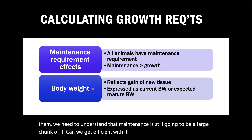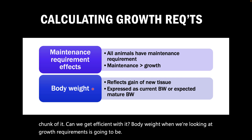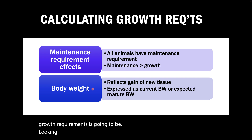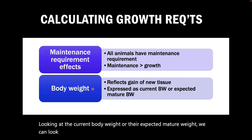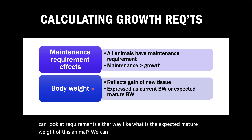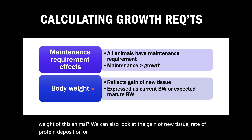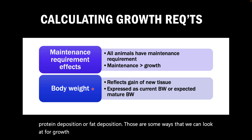When looking at growth requirements, body weight is going to be based on the current body weight or their expected mature weight — we can look at requirements either way. We can also look at the gain of new tissue, rate of protein deposition, or fat deposition. Those are some ways to evaluate growth requirements that you'll see applied in some species.